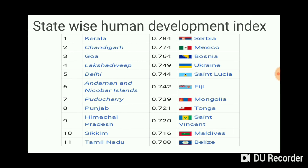Now let's calculate the Human Development Index at the state level in India. Who is first? Kerala is ranked first at the state level.